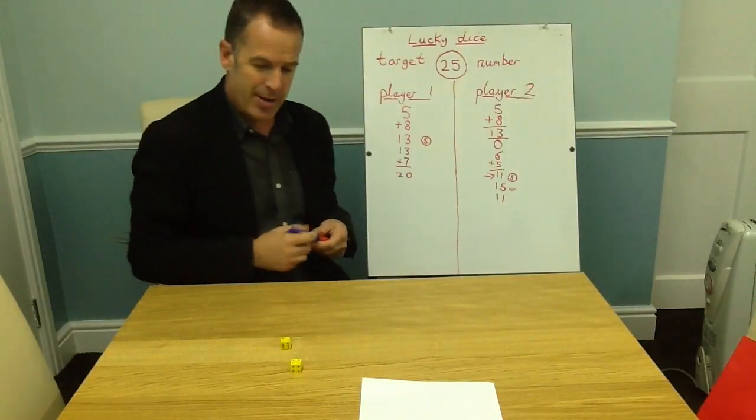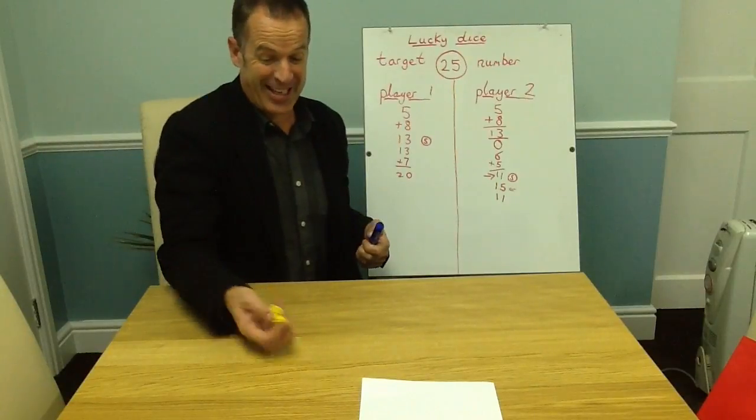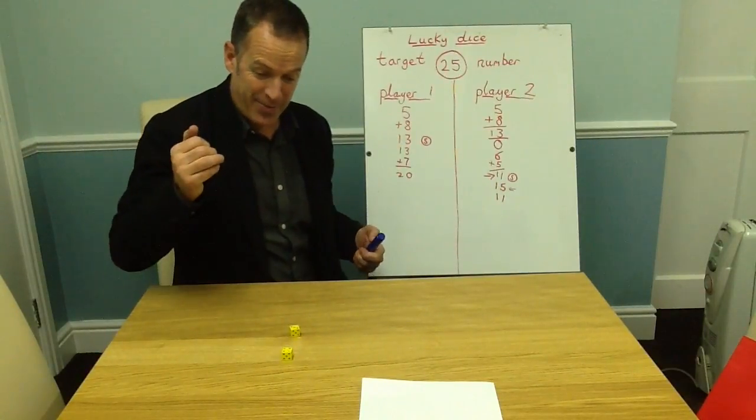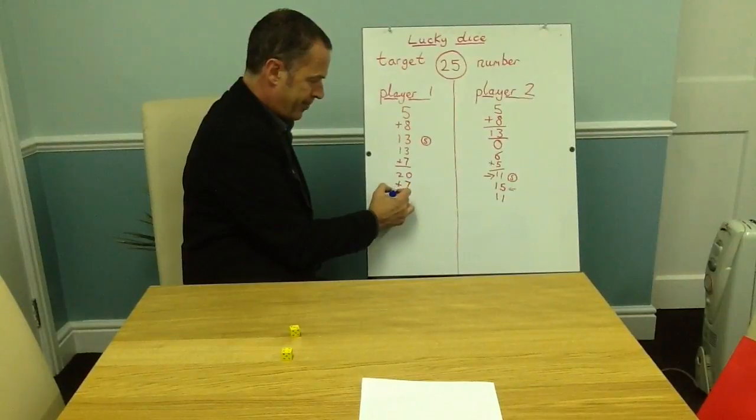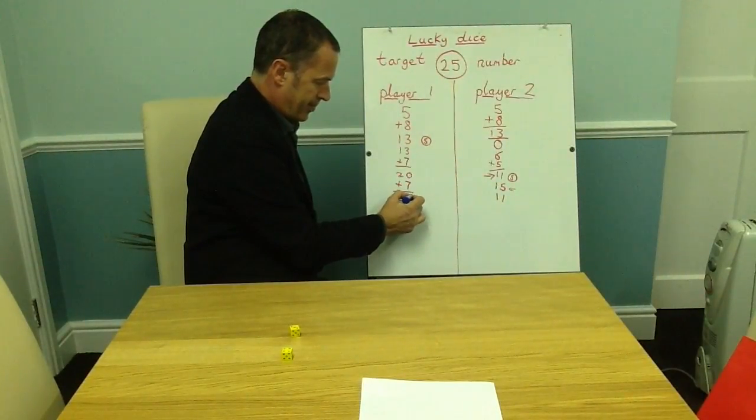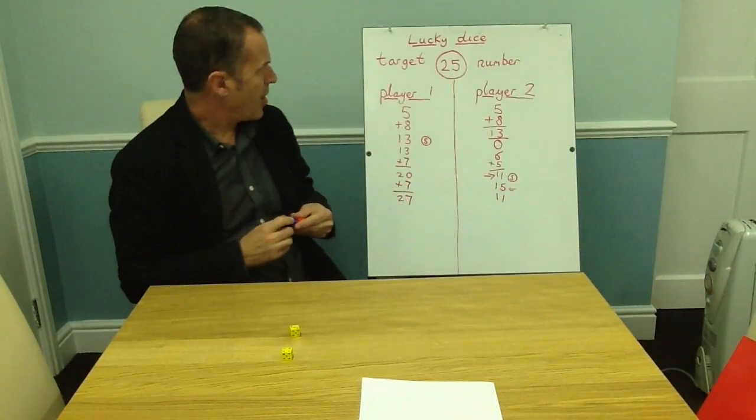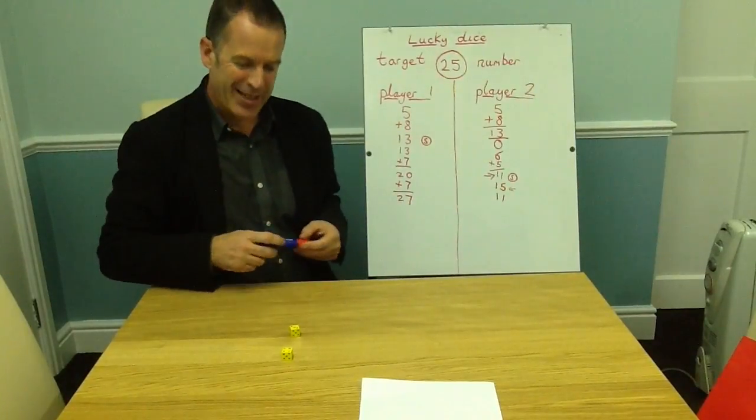I think I'm going to risk it and hopefully get to twenty-five. Four and three is seven. So player one wins because they've got twenty-seven.